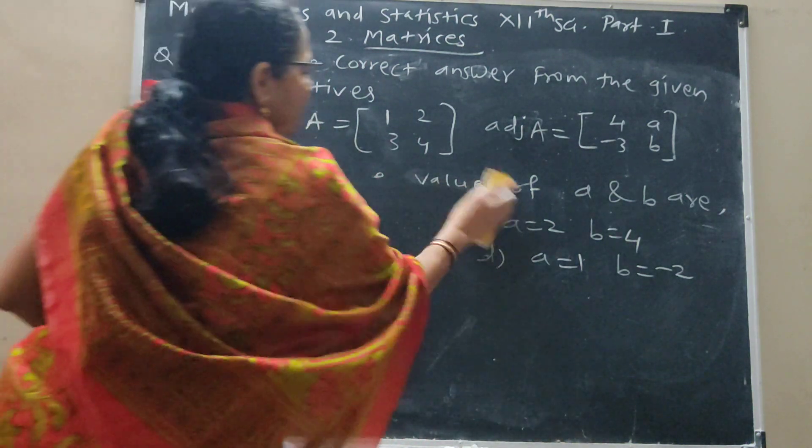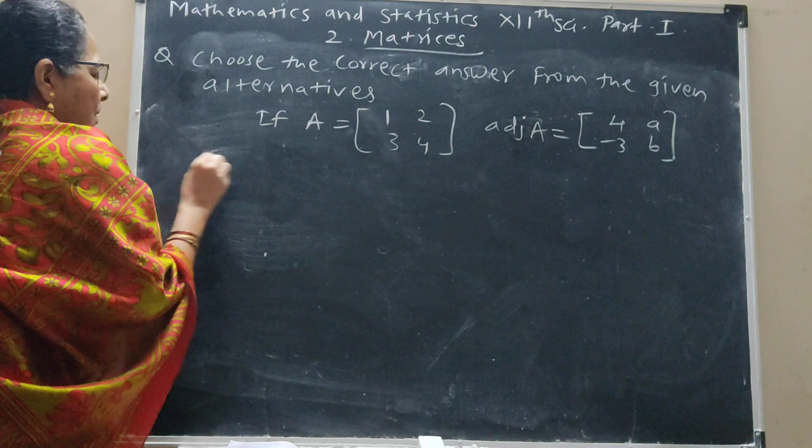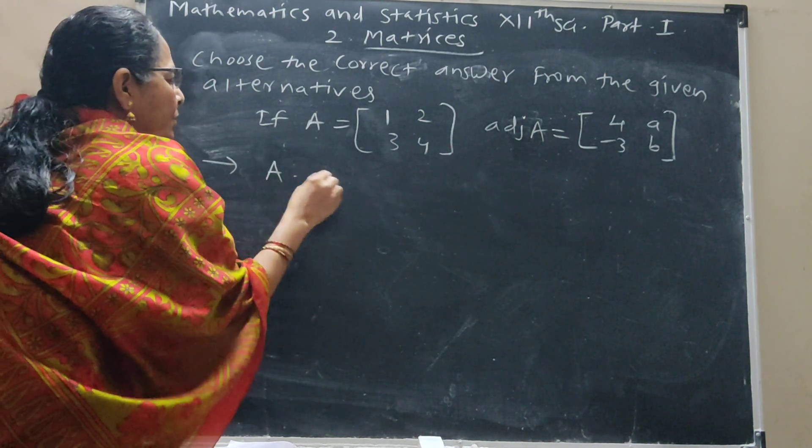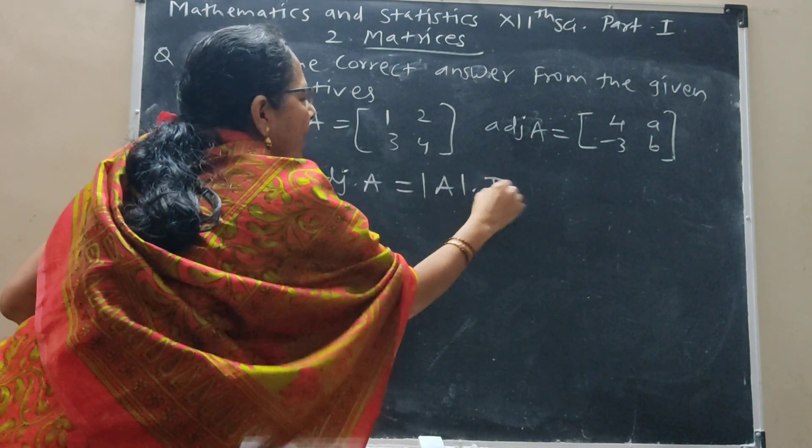Now for solving this question, we have a formula: A into Adjunct A is equal to determinant A into I.